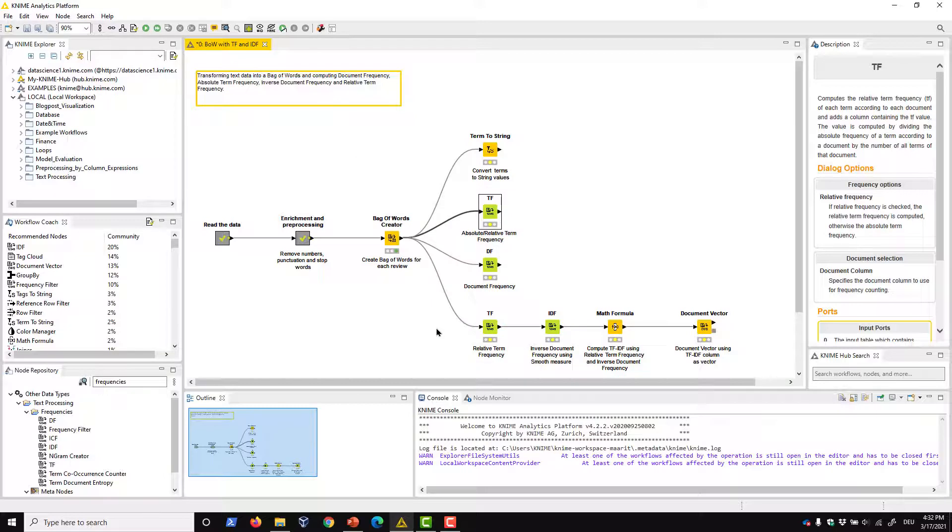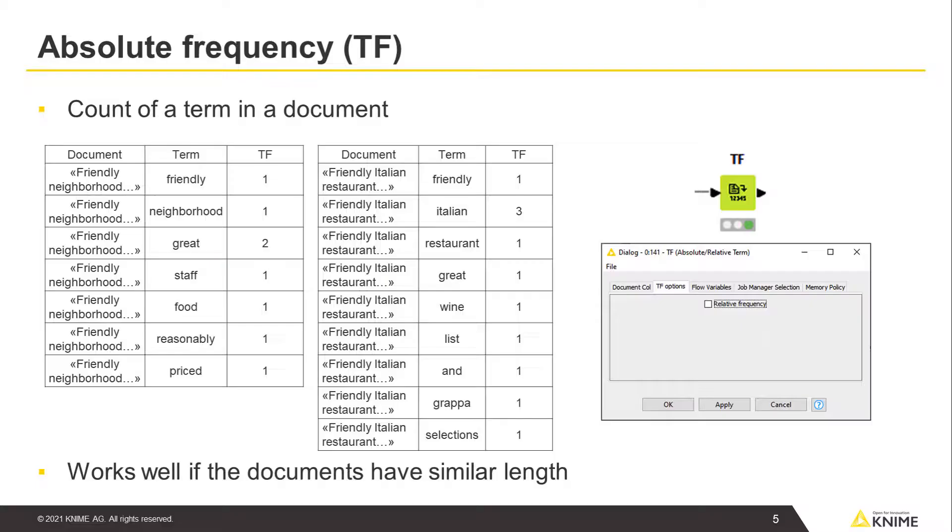The input table must include two columns: a document column and its bag of words in a term column. The TF node calculates the absolute and relative term frequencies within the documents. Absolute frequency is the count of a term in a document. For example, the absolute frequency of the word great is 2 in the first document and 1 in the second document. The absolute frequency works well if the document corpus only contains documents of similar length, for example, tweets.